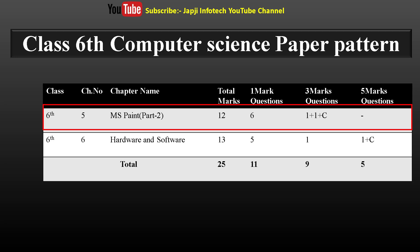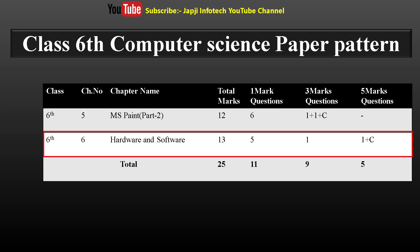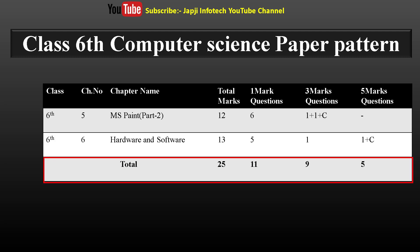First of all, let's take a look at the paper pattern of Class 6 subject Computer Science. A paper of total 12 marks will appear from Lesson 5 MS Paint Part 2, which will have 6 questions of 1 mark, 3 questions of 3 marks and 1 choice question, and no question of 5 marks will come from this lesson. Similarly, a paper of total 13 marks will come from Lesson 6 Hardware and Software, in which 5 questions of 1 mark, 1 question of 3 marks and 2 questions of 5 marks will come, out of which 1 question will be asked. By keeping this paper pattern, students can score well in the exam.